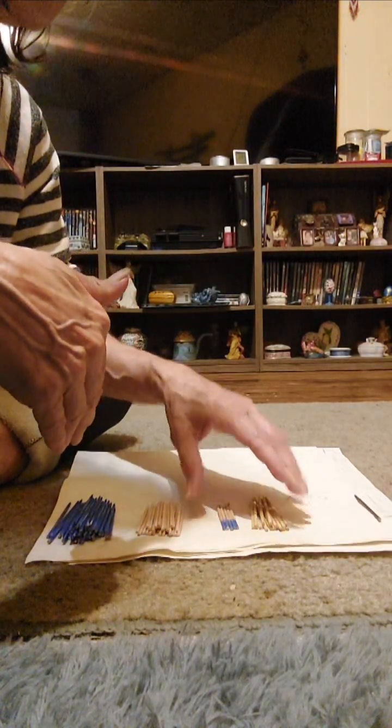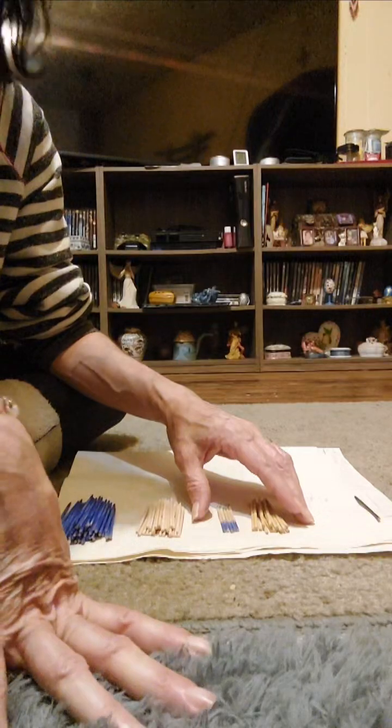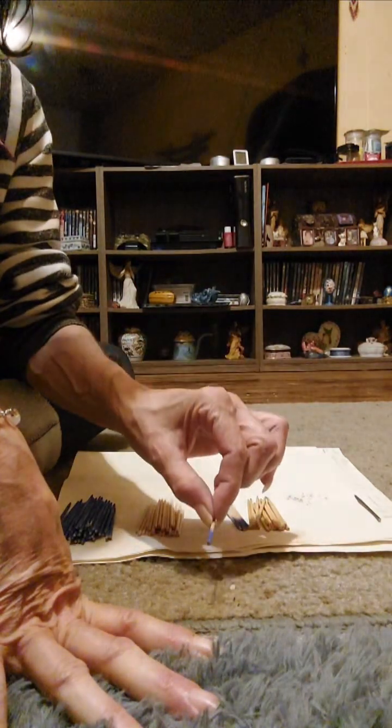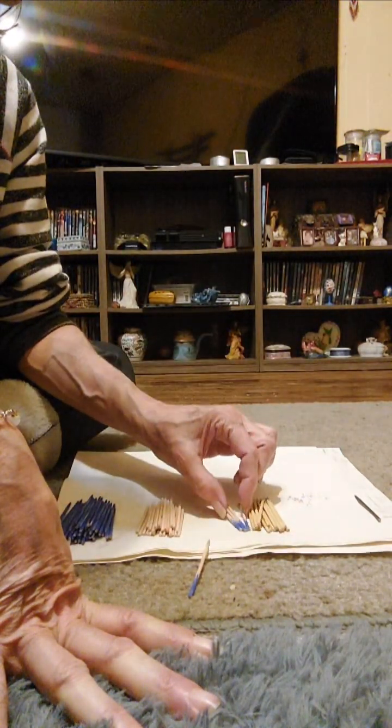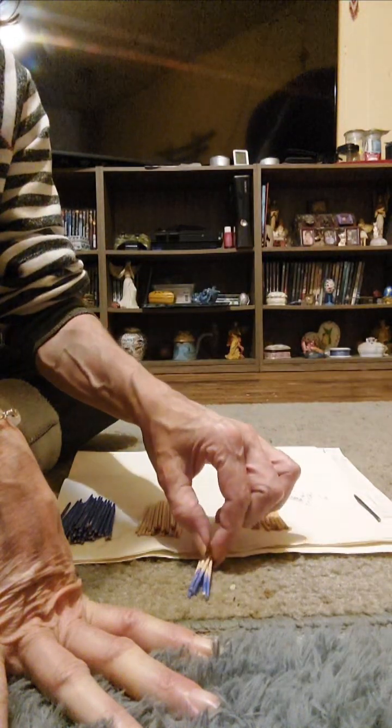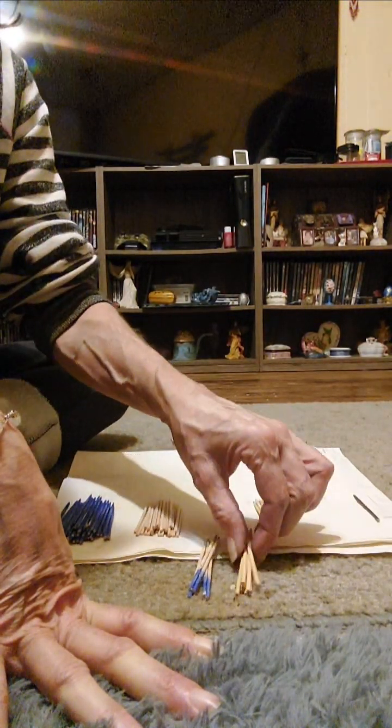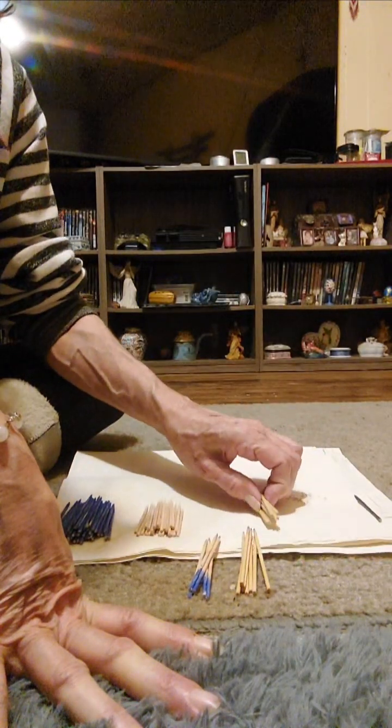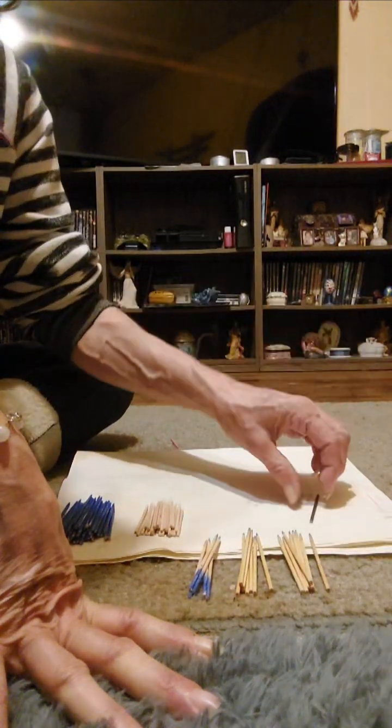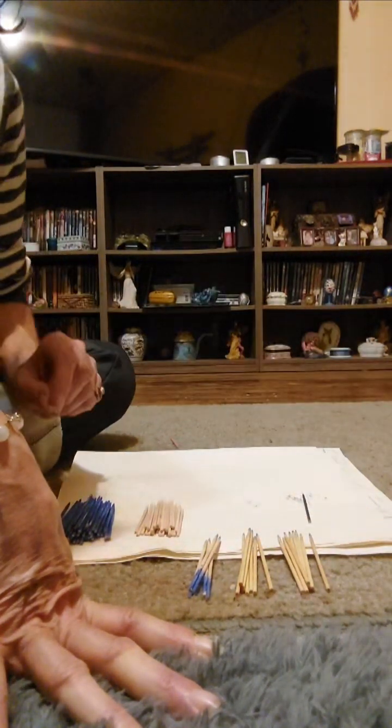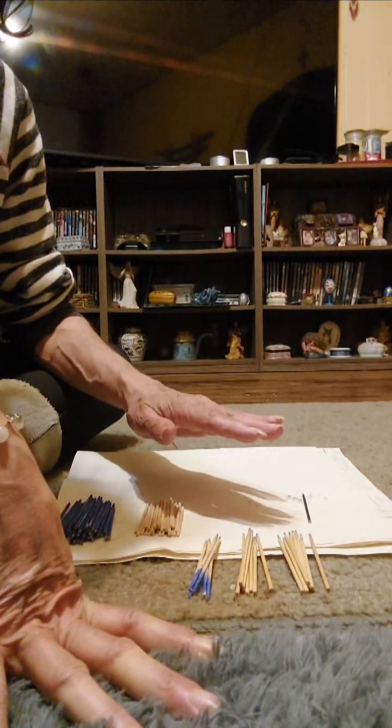This group right here, say this guy here might get food stamps, and these guys right here might get food stamps. Some of these guys get food stamps and medical. Some of these guys get food stamps, medical, and financial assistance. That's the way it breaks down.